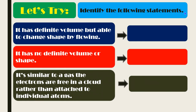Now let us identify. We will read the description and identify the word being described. First: it has a definite volume but is able to change shape by flowing. Yes, you are correct — the answer is liquid. Next: it has no definite volume or shape.